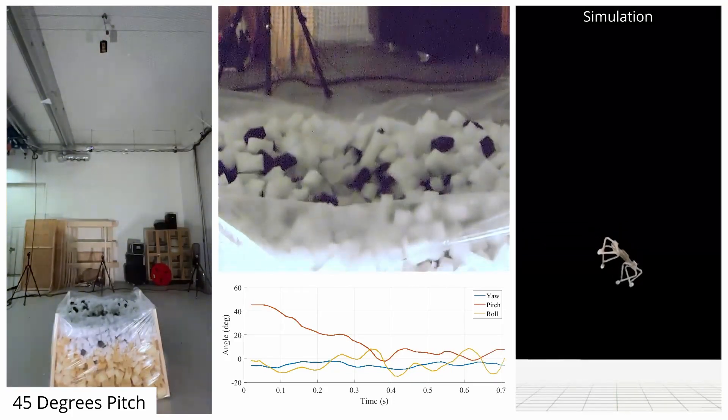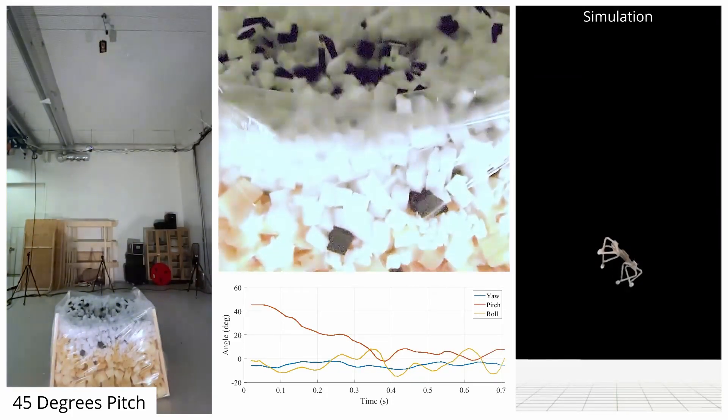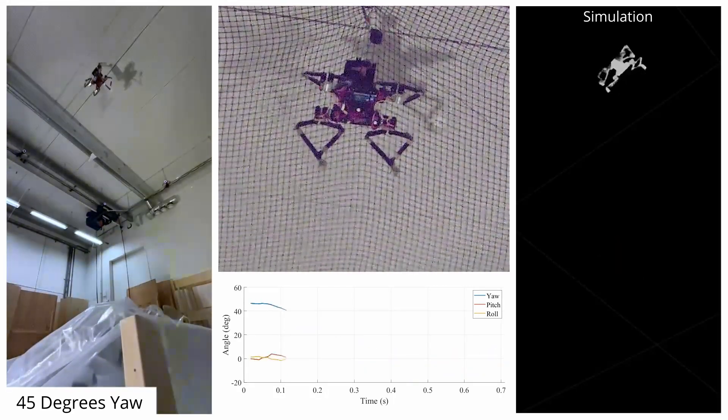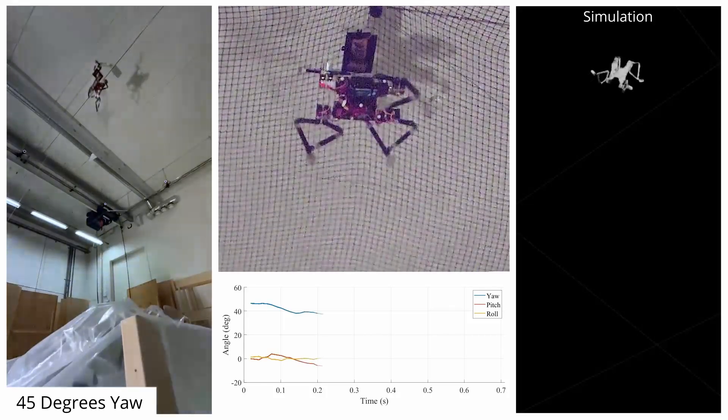As you can see the angle errors go to zero and the quadruped reaches its commanded setpoint of 45 degrees pitch. We now show tracking of commanded 45 degrees setpoints also in yaw and roll.